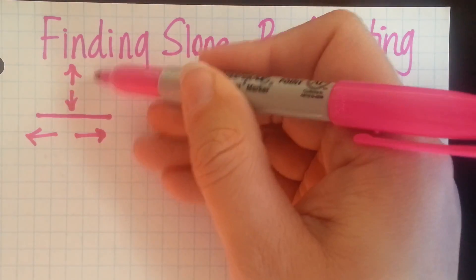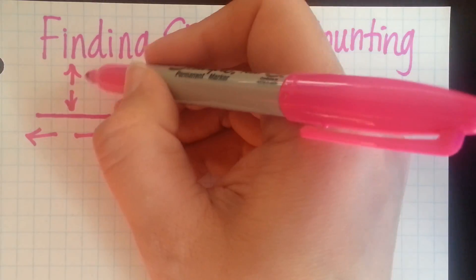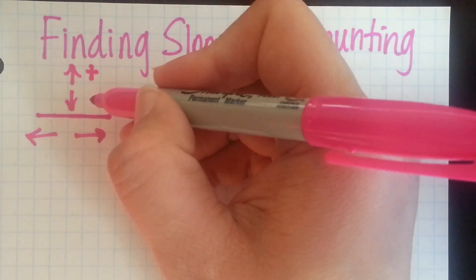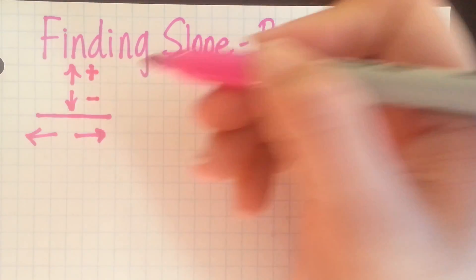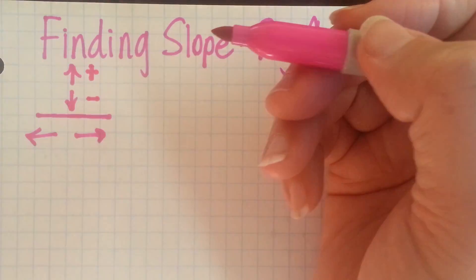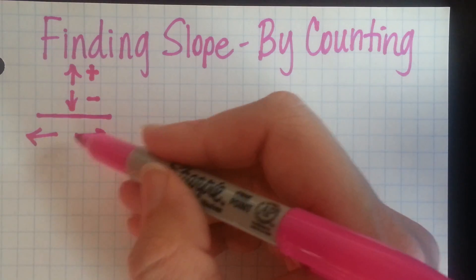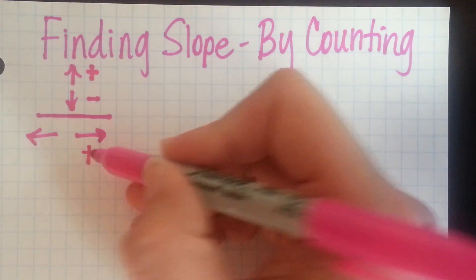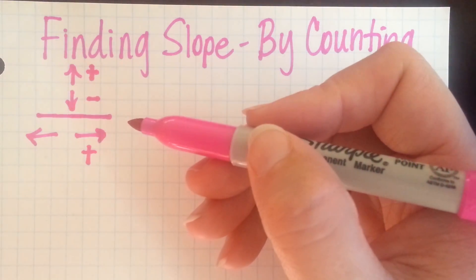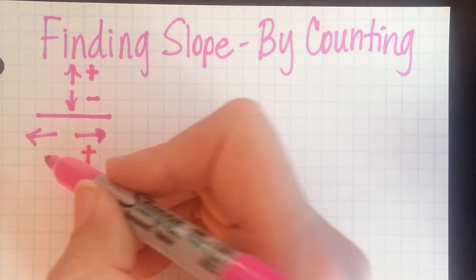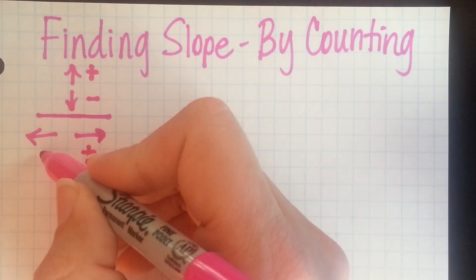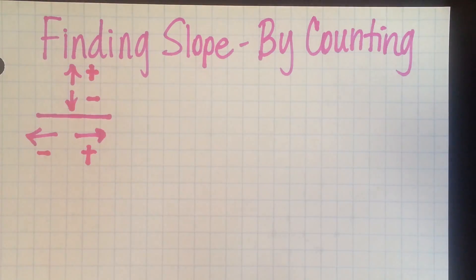So the numerator, if it was positive, told us to go up, and if it was negative, told us to go down. The denominator, if it was positive, told us to go right, and if it was negative, told us to go left.